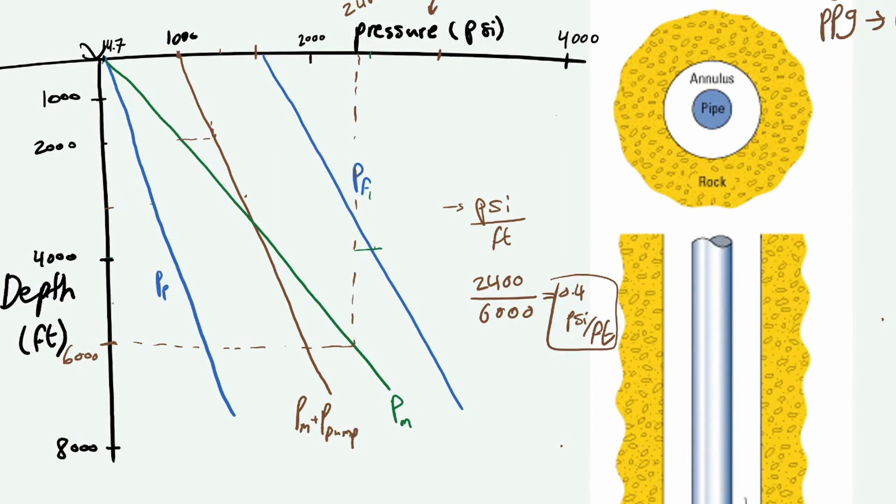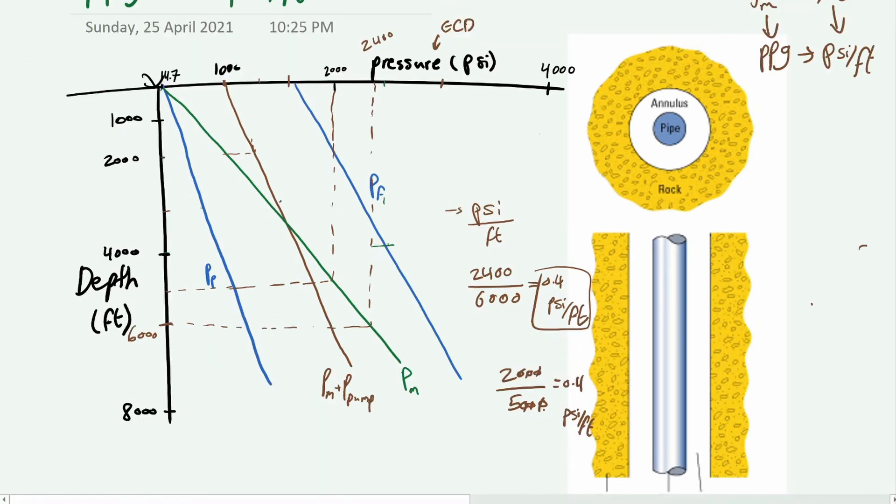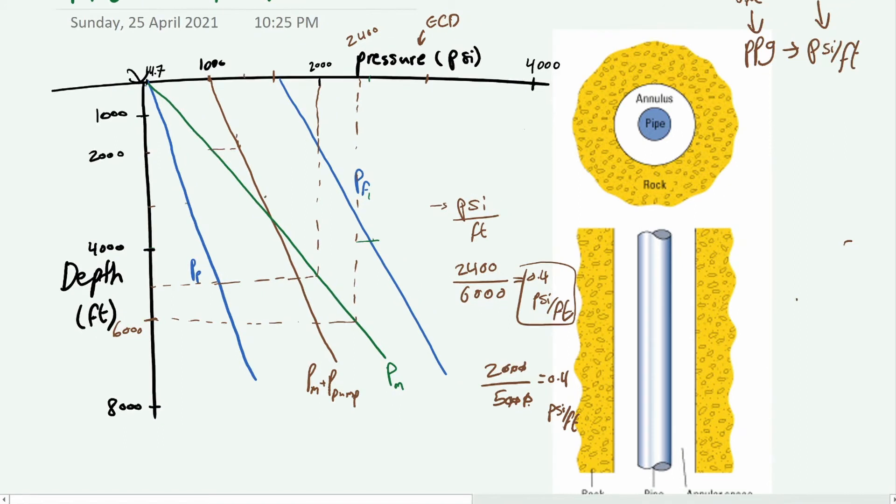Just to demonstrate that it still works in other depths, if we take 5000 and do the same, this is 2000, so it's going to be 2000 over 5000, and you get 0.4 psi per foot.